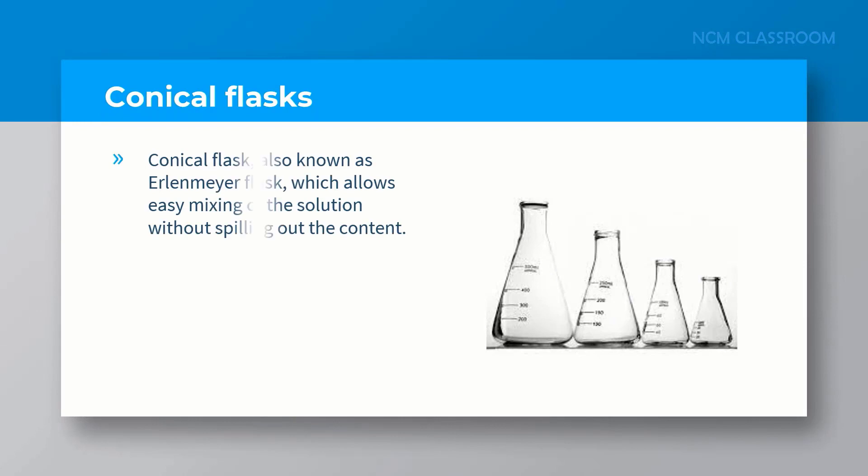Conical flasks, also known as Erlenmeyer flasks, allow easy mixing of the solution without spilling out the content since the flask has a narrow long neck.